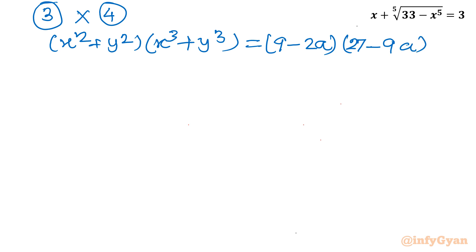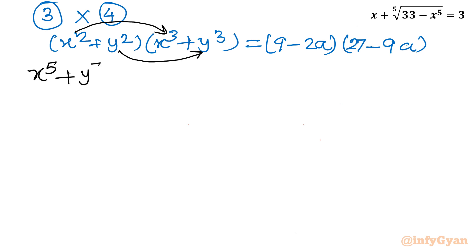Now let us take the product. Multiplying both sides: x^2 times x^3 gives x^5, y^2 times y^3 gives y^5. For the cross terms: x^2 times y^3 plus x^3 times y^2 — we can take x^2 y^2 common, leaving x plus y in the bracket.